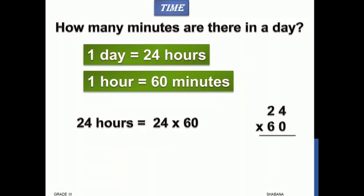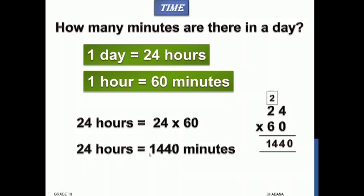When you multiply any number with zero, your answer is going to be zero. Since we have one zero, we write the one zero on the right side and then start multiplying with 6. Six fours are 24, and then six twos are 12, 12 plus 2 is 14. So 1440. 24 hours is equals to 1440 minutes, so minutes in a day is equals to 1440 minutes.